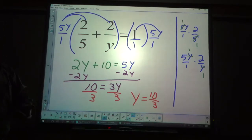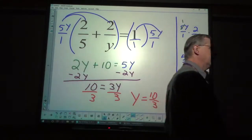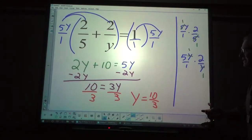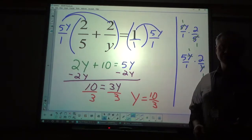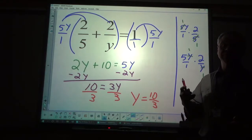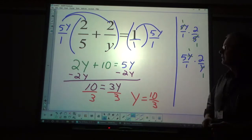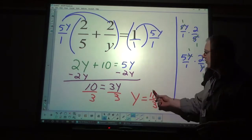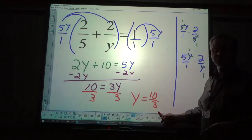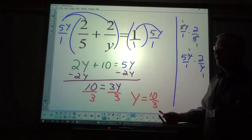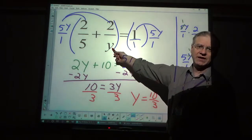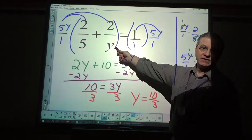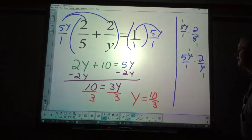You should always check for extraneous solutions. Extraneous solutions, basically, are solutions that would cause a problem in the original equation. For example, if somehow the end answer here was y was zero, that would be a problem because I'm not allowed to have zero as a divisor in the denominator.